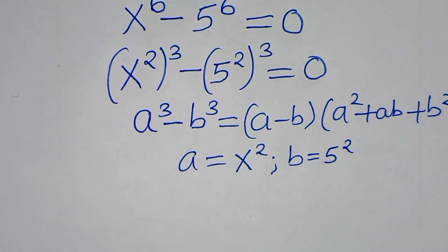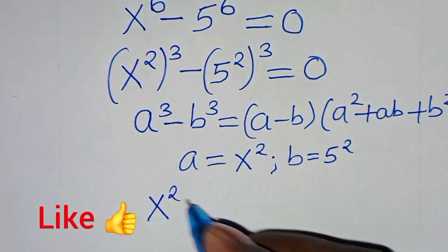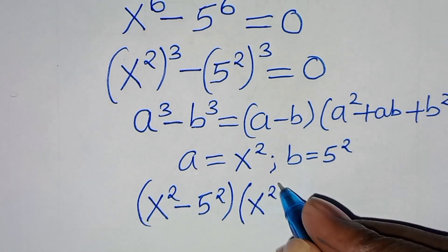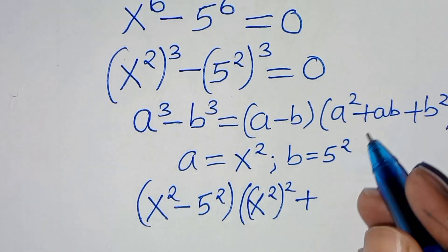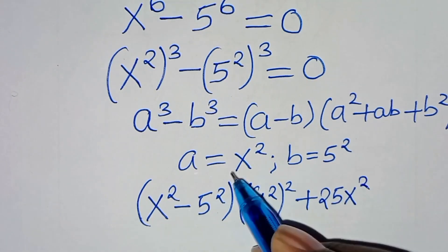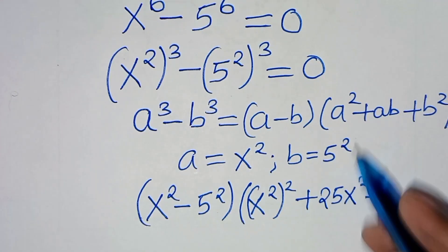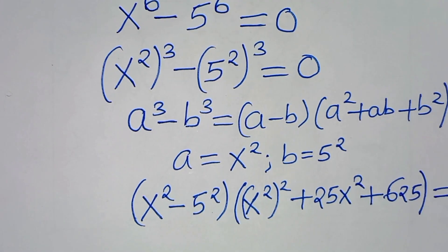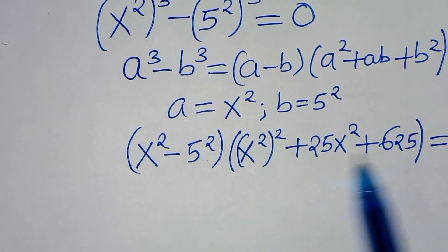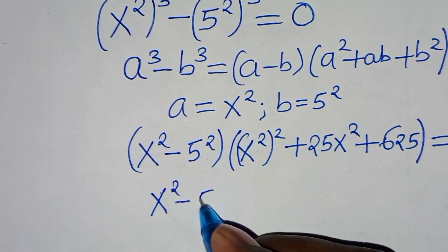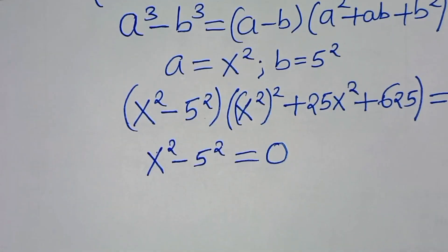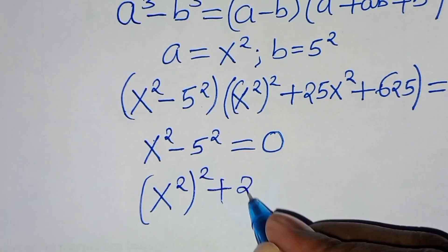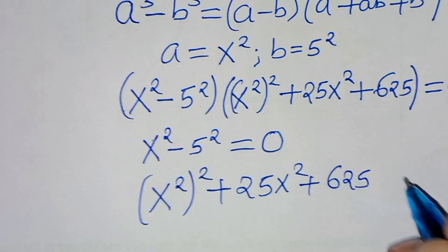So the next step from here: we'll have (a minus b), that is (x squared minus 5 squared), and then a squared, which is x squared to the power 2, then plus a times b which is 5 squared times x squared, then plus b squared which is 25 squared, this is 625. Close the bracket — this is now equal to 0.